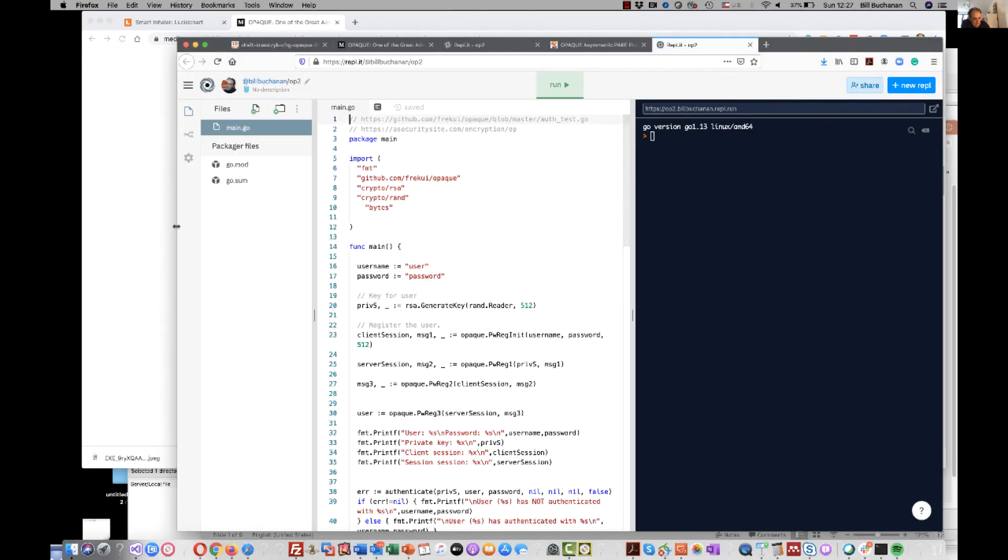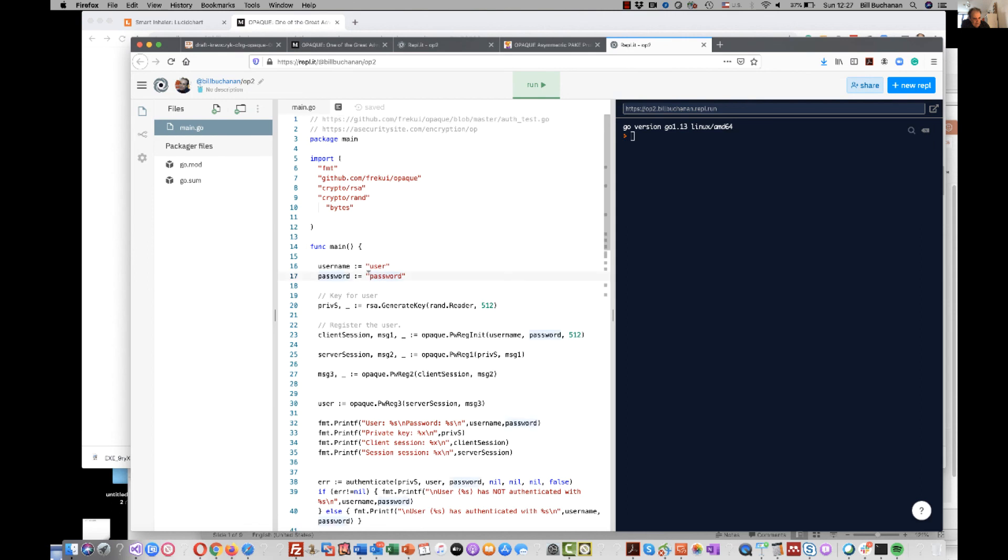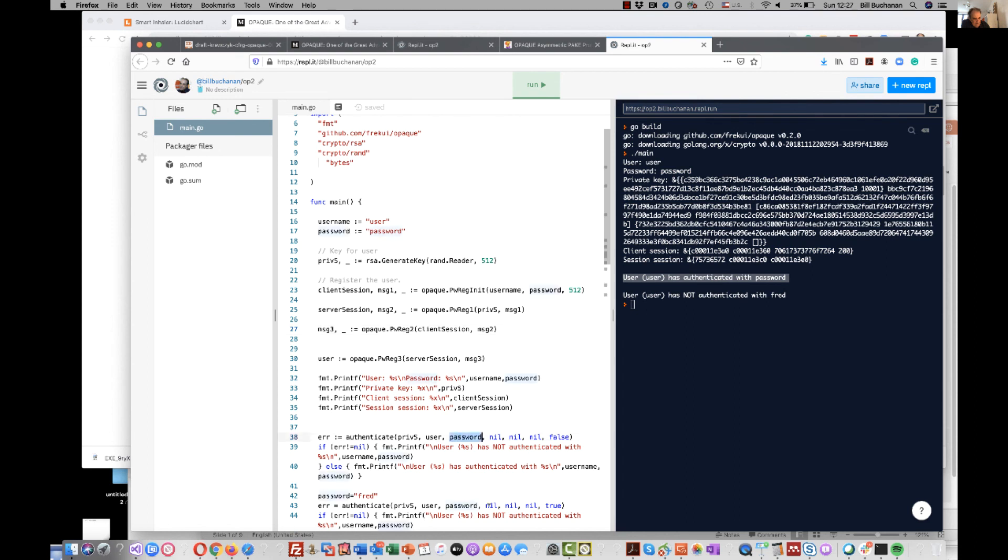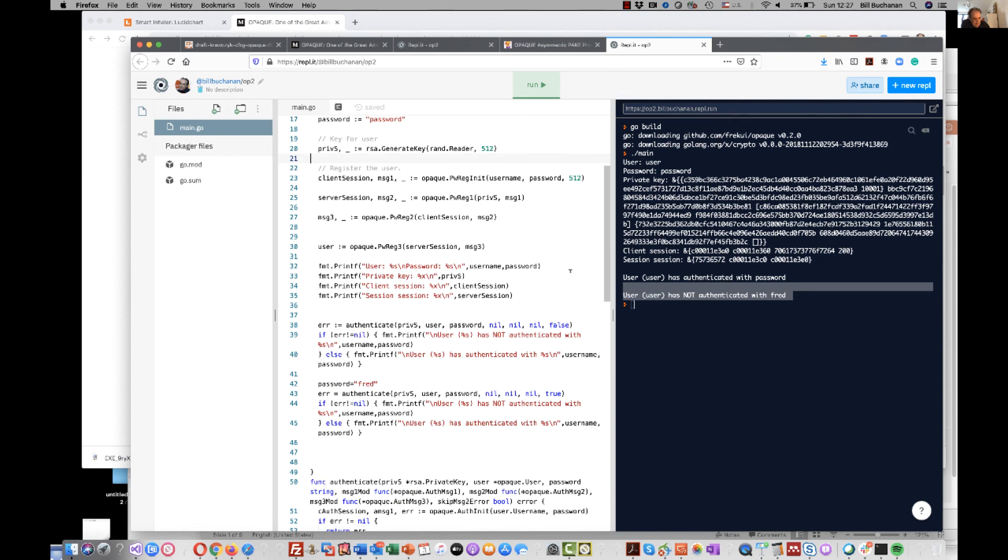So let's run some code. Here's the code here, we're just deriving it from this site here. And if we run it, there we go. So we can see that the user is authenticated with the correct password. But then when we use the wrong password then the user is not authenticated from there.